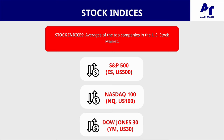Moving on to stock indices — these are basically the averages of the top companies in the United States. There are three: the S&P 500 (top 500 companies), the NASDAQ 100 (top 100 companies, predominantly tech), and the Dow Jones (top 30 companies). These lists change a bit year to year, but you don't need to know the specific companies for day trading.